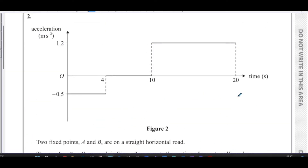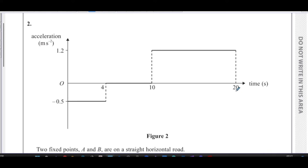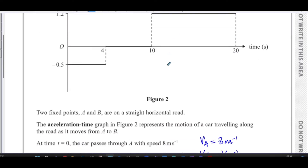One of the interesting things about acceleration-time graphs is that the area under the graph gives the change in velocity. The car is going in one direction — first decelerating, then traveling at constant velocity for the next six seconds (acceleration is zero), and then accelerating uniformly at 1.2 m/s² until t=20 seconds. We need to show that its speed at 20 seconds is 18 m/s.